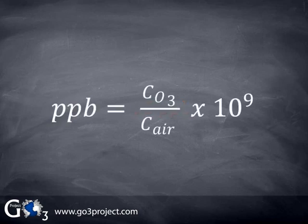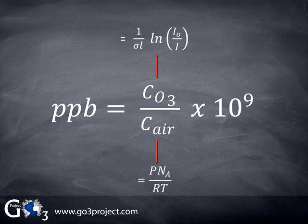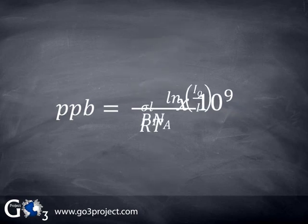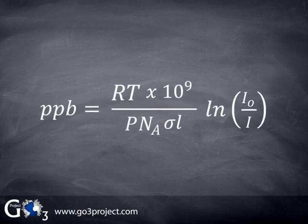Let's now combine the two equations, the Beer-Lambert law and the ideal gas law, to obtain a single equation for calculating ozone mixing ratio in PPB. This is the equation used in all modern ozone monitors to calculate ozone. Since the effects of temperature and pressure on air density are included, ozone monitors that use this equation are said to be temperature and pressure corrected.